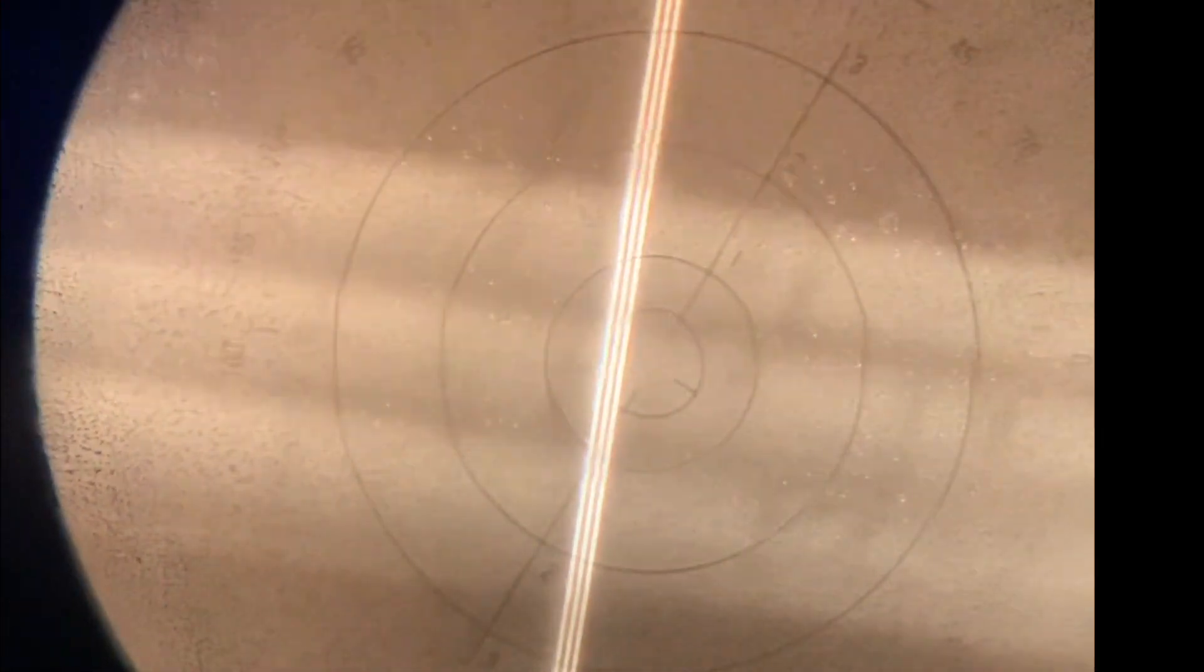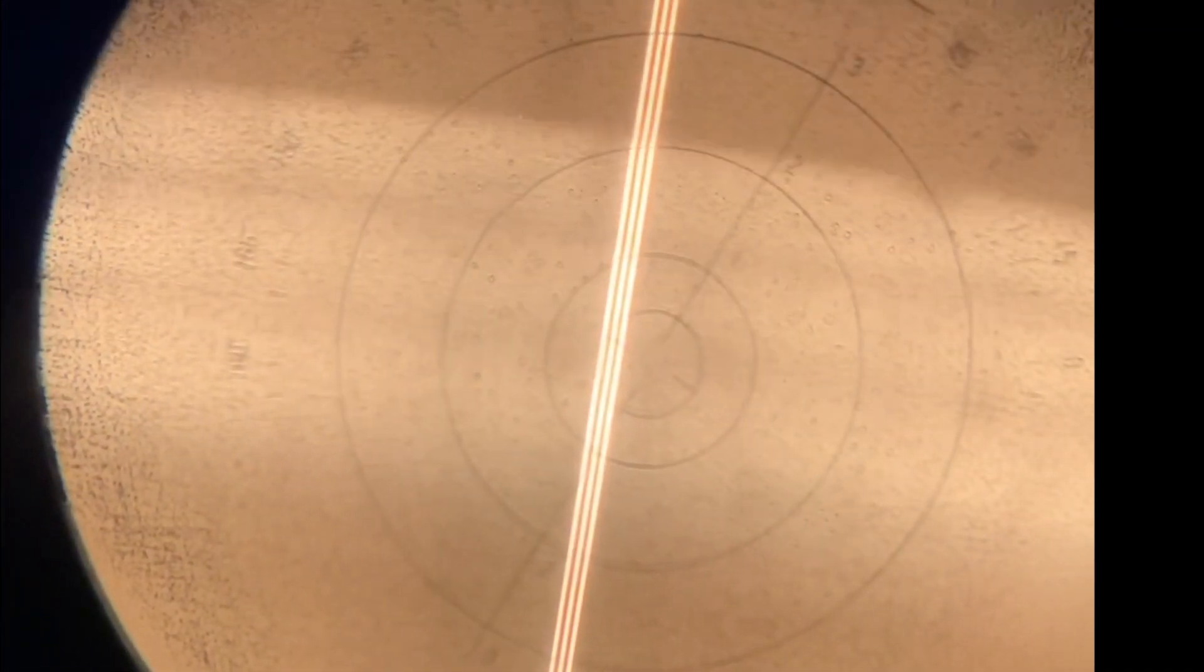Remember, in manual lensometry, we are finding the two principal meridians of a sphero cylinder lens. We can read a lens in either plus cylinder or minus cylinder.